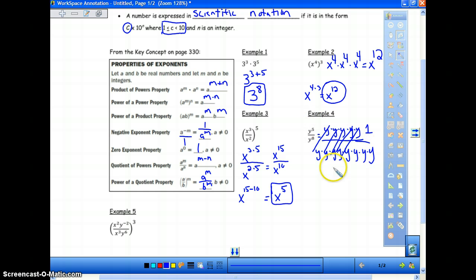So we'd have a 1 on the top, and we'd have y to the 3rd on the bottom. But watch how this works if we use our properties. We will have y to the 5th minus 8. This will equal y to the negative 3rd. But we've said our rule is we cannot leave a negative exponent. So we need to create a fraction where this will be on the bottom now, and we will eliminate our negative exponent. So our answer here is 1 over y to the 3rd. We always have to get rid of negative exponents.